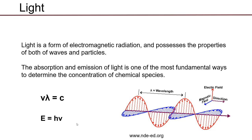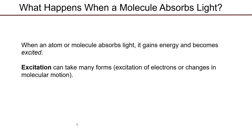Because of the way visible and ultraviolet light interact with molecules, we can learn a lot about the electronic structure of molecules based on how they absorb visible and ultraviolet light. More importantly, from an analytical standpoint, we can quantify molecules based on the amount of light absorbed by a solution containing the analyte. When an atom or molecule absorbs light, it gains energy and becomes excited. When talking about ultraviolet and visible light, this means the high-energy electrons in the highest occupied molecular orbital get promoted to what was formerly the lowest unoccupied molecular orbital.